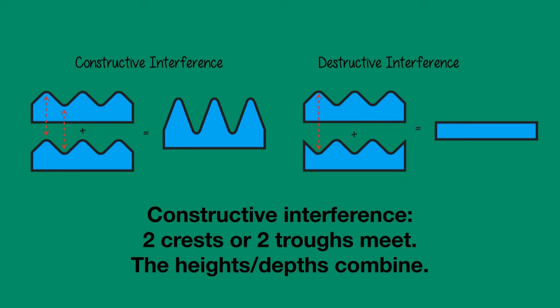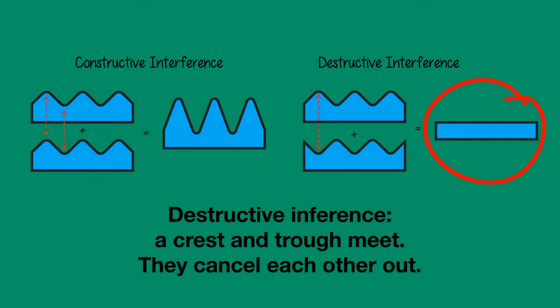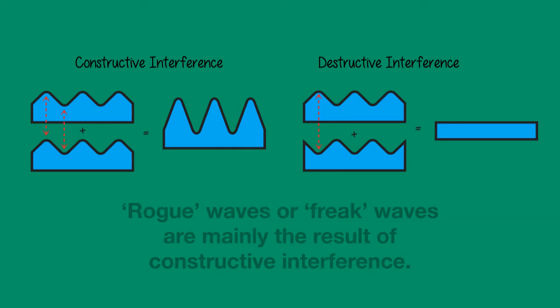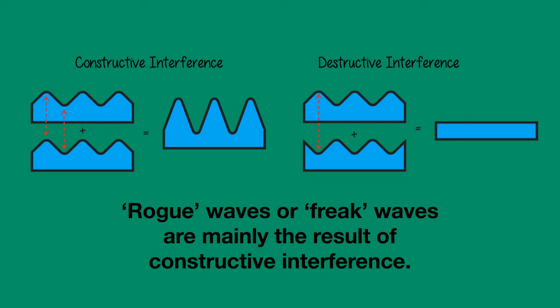When two crests or two troughs meet and their heights or depths combine, we call this constructive interference. When a crest and a trough meet and they cancel each other out, we call this destructive interference. You may have heard of mysterious sudden high waves that wreck ships — these rogue waves, or freak waves, are rare waves that are at least twice as high as other waves in the area. They are mainly the result of constructive interference.